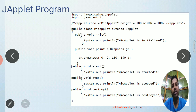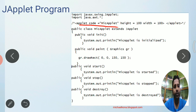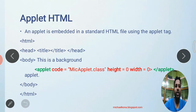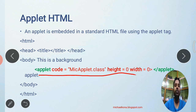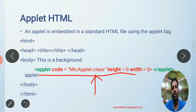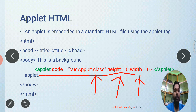This tag is the applet tag and it is supposed to be in an HTML program. Here is a sample HTML program — we see HTML, head, body, and within that there is an applet tag. We will place this applet tag within the HTML program and tell where the bytecode is using the code attribute. We also specify the height and width required for the applet to be displayed in the browser.